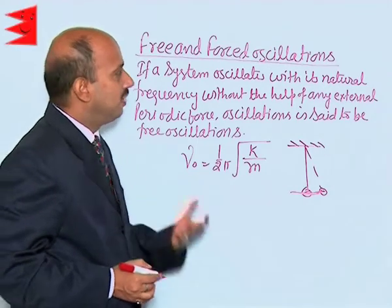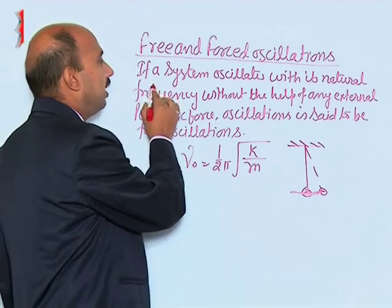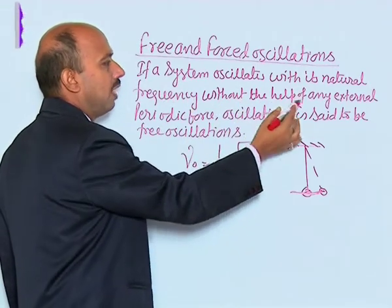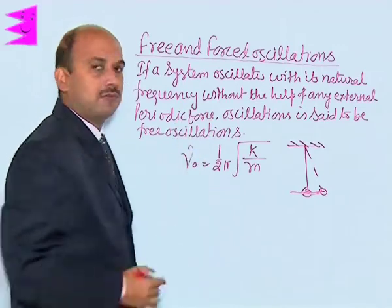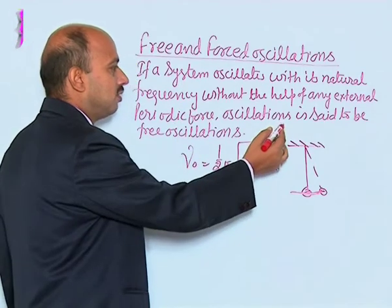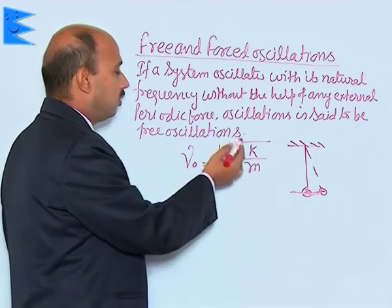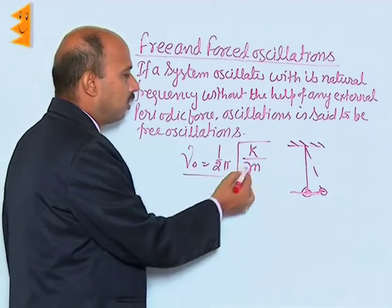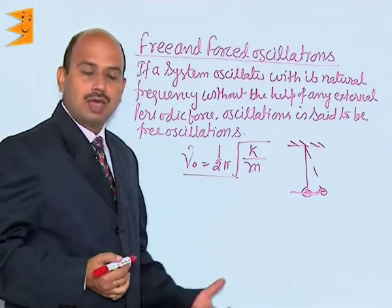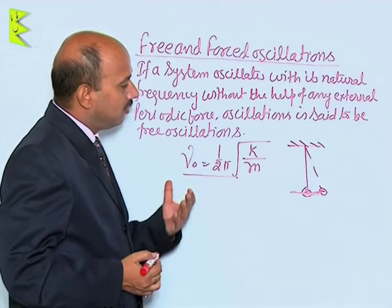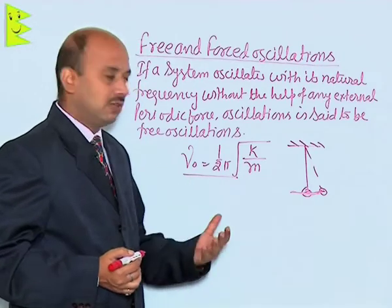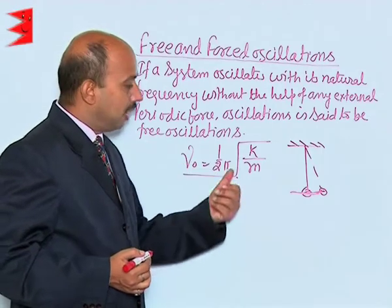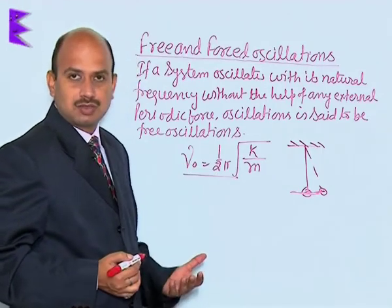The definition of free oscillations is: if a system oscillates with its natural frequency without the help of any external periodic force, its oscillations are said to be free oscillations. Its frequency is given by 1 upon 2π under root of k upon m. That means the natural frequency, or frequency of free oscillation, depends on the spring factor and the mass, that is called the inertial factor.